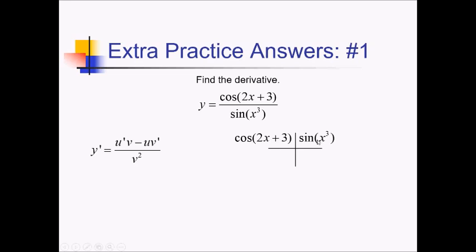Now these derivatives will both require chain rules, so this is cosine of something. The derivative of that is negative sine of something, so negative sine of 2x plus 3, times the derivative of 2x plus 3, so that's times 2. Over here, derivative of sine of something is cosine of something, so cosine of x cubed, times the derivative of x cubed, which is 3x squared.